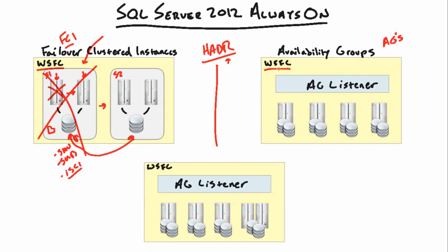Availability Groups still rely on Windows Server Failover Clustering, but not as heavily as FCIs. Setup is really easy — you just need a cluster, add the servers as nodes, configure your quorum, and you're done. There's no special SQL Server installation required. You do your standard SQL Server installation and you're ready to go. The cluster is really just there to monitor health and initiate failover.